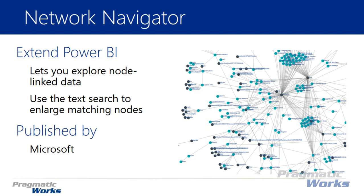The Network Navigator also has the ability to have a search box where you can search for particular nodes that have matching text. So it allows you to search through these different nodes and the relationships in your data. This one is developed by Microsoft, so let's go ahead and take a look at where we can download it and start to use it.